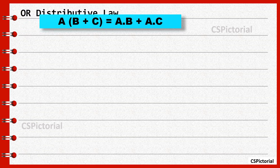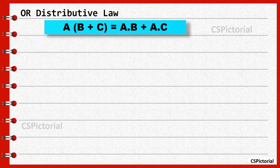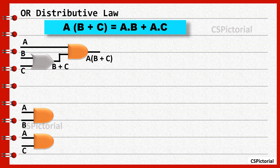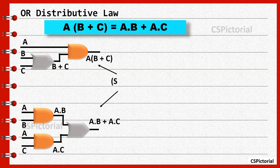OR distributive law. This is similar to AND distributive law with all AND gates replaced with OR gates and OR gates replaced with AND gates. So A times B plus C is equal to A dot B plus A dot C. It can also be proved using a truth table.